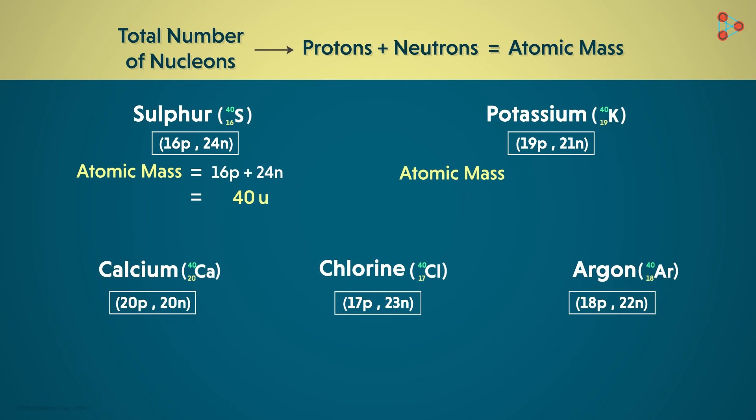Next is the potassium isotope having 19 protons and 21 neutrons. So again, we get the atomic mass as 40 units. And similarly, we get the atomic mass as 40 units in each of the remaining cases.